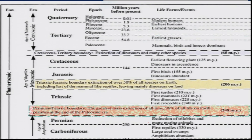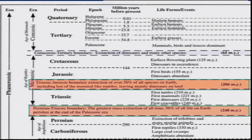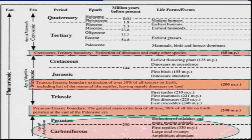Looking at different volcanic events: the Permian-Triassic boundary was a major event around 248 million years back. Then we have the Triassic-Jurassic boundary, also related to eruptions, with major species extinction during this period. Then we have the Cretaceous-Paleogene boundary around 65 million years back — all these events were probably related to major eruptions in the region.